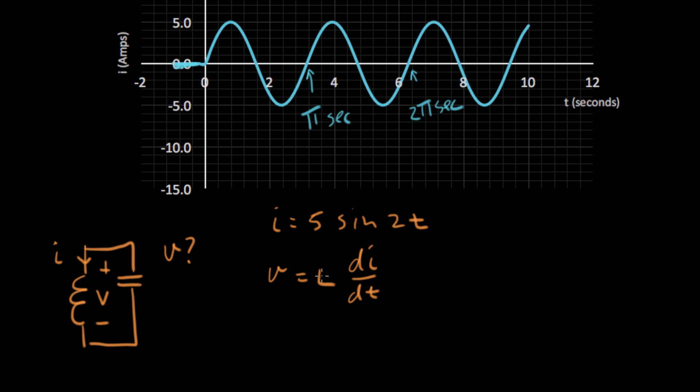And let's see what happens here. V equals L is one, times di dt. So that's d dt of five sine two T. Now let's take that derivative. V equals, five comes out of the derivative. The derivative of sine of two T is two times cosine of two T. So our voltage solution is 10 times cosine two T.